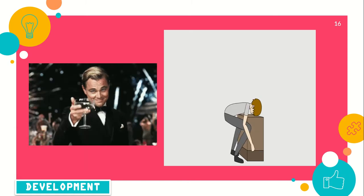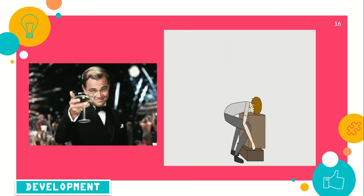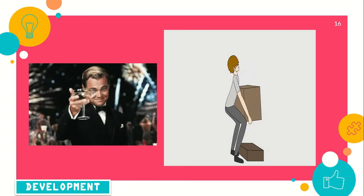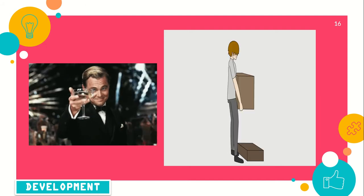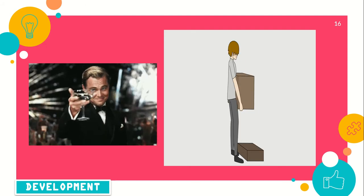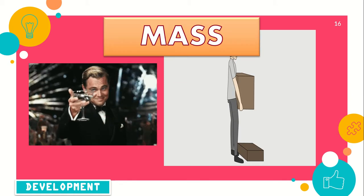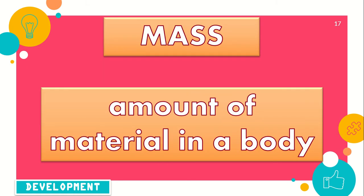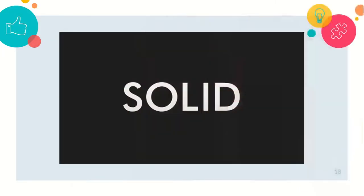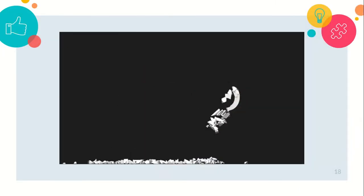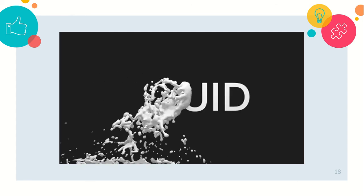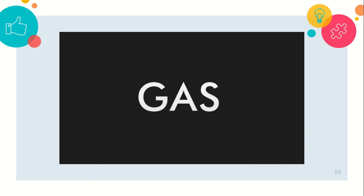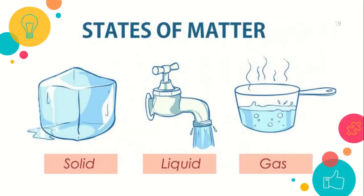Now let's try this — lift a glass, then lift a box. Which is heavier? That's right, the box is heavier. But why? This is because the box has more mass. But what is mass? Mass is the amount of material in a body, and matter has mass.